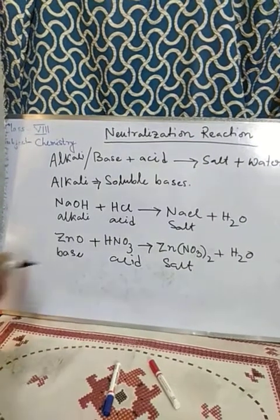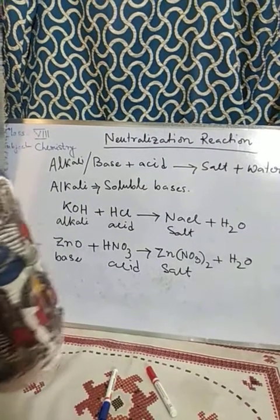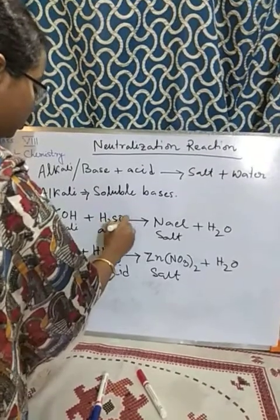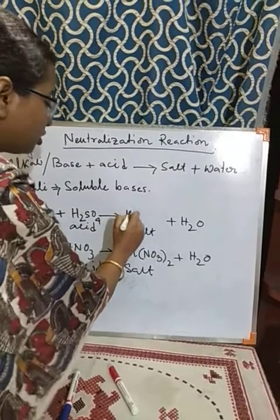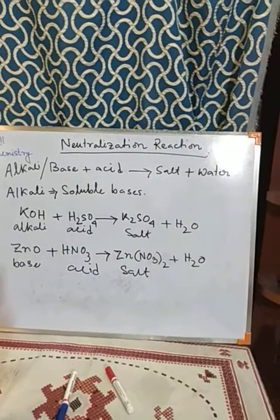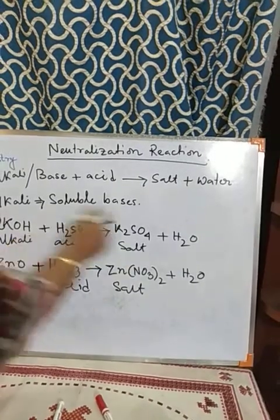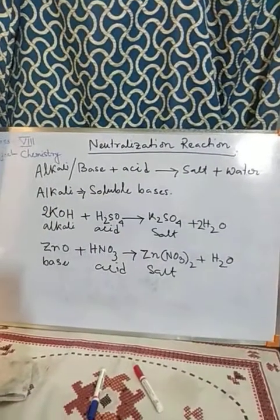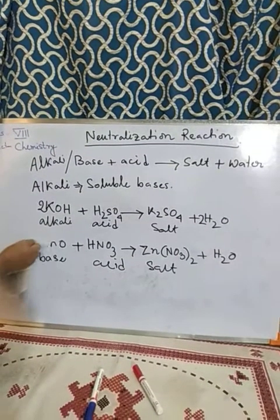Instead of sodium hydroxide, we can take any other base like potassium hydroxide (KOH). If we take KOH as alkali and H2SO4 as acid, then we get potassium sulfate (K2SO4) and water. Since the reaction is not balanced, we need to take 2KOH, so we get 2 KOH reacting with H2SO4 to give K2SO4 and 2 water.